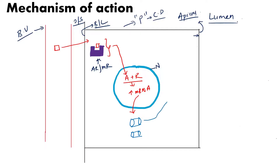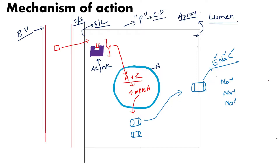These transmembrane proteins get incorporated into the apical membrane of the P cell. This transmembrane protein is called ENaC — the epithelial sodium channel. In the lumen there is tubular fluid containing a lot of sodium. The function of ENaC is to absorb this sodium from the tubular fluid into the cell — this is called reabsorption of sodium. So the sodium that was present in the tubular fluid has now entered into the P cell.